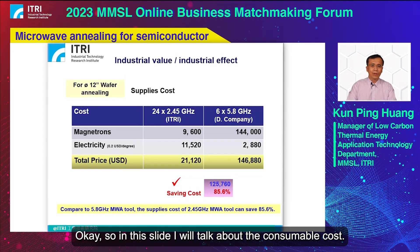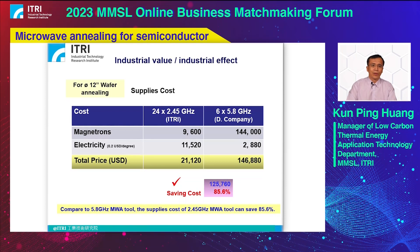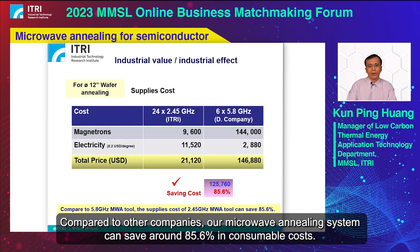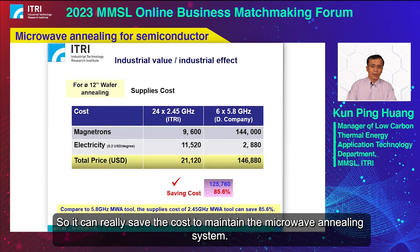This slide compares the consumable cost against other companies. Our microwave annealing system can save around 85.6% in consumable costs, which greatly reduces the cost of maintaining the microwave annealing system.